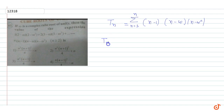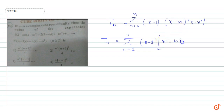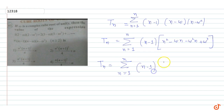Now I will simplify. Expanding (n-ω)(n-ω²): n·n = n², minus ω·n, minus ω²·n, and minus ω times minus ω² gives plus ω³. So combining: n² - n(ω + ω²) + ω³. Since ω + ω² = -1 and ω³ = 1, this simplifies to n² + n + 1.